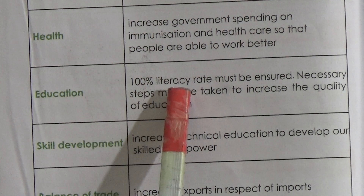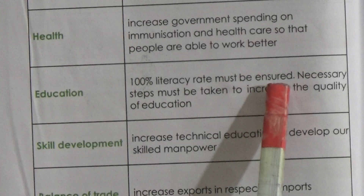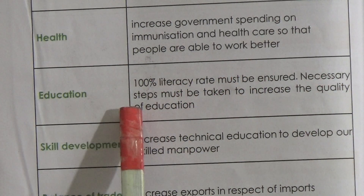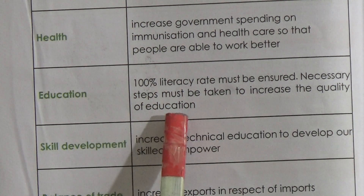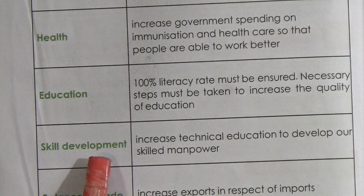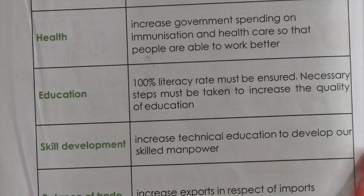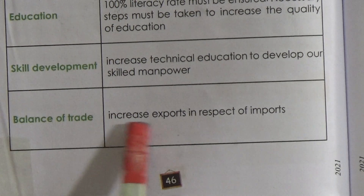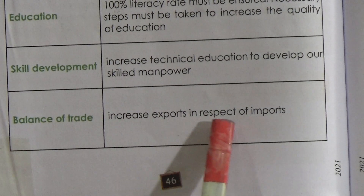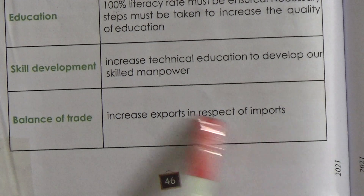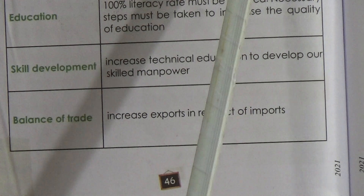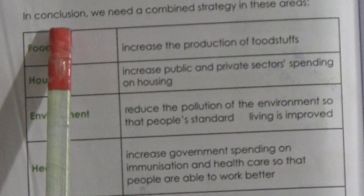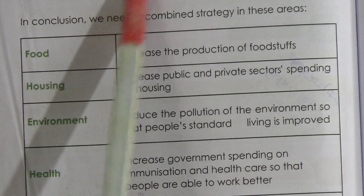Education: 100% literacy rate must be ensured; necessary steps must be taken to increase the quality of education. Skill development: increase technical education to develop skilled manpower. Balance of trade: increase exports relative to imports. If we adopt a combined strategy in these areas, we can solve the overpopulation problem.